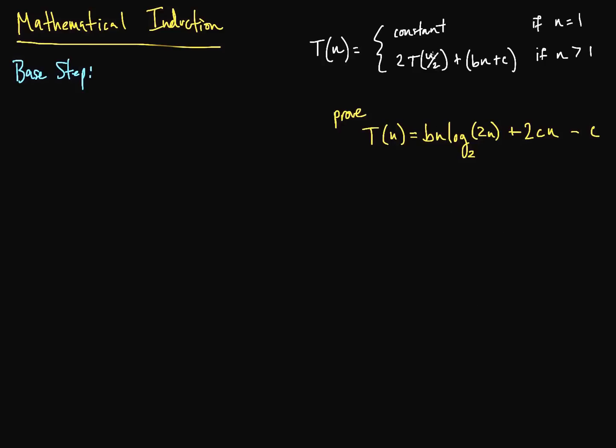And we're going to use inputs of n that are some power of 2. Why is that? Let's say instead of this, we used n equals 3, and we would have something like this. So that's 3 halves plus 3b plus c. And we'd have to plug this in, so this would end up giving us some T(3/4), which would then give us T(3/8). We're not going to get down to what we really want, we have some weird number and this is kind of a mess.